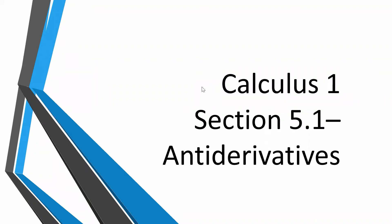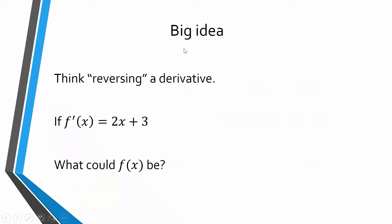In section 5.1, we're going to look at antiderivatives. The big idea of this section is that we are going to reverse the process of finding the derivative. In the last few chapters, we've found derivatives and then used them to do various things. Now we're going to reverse that process.